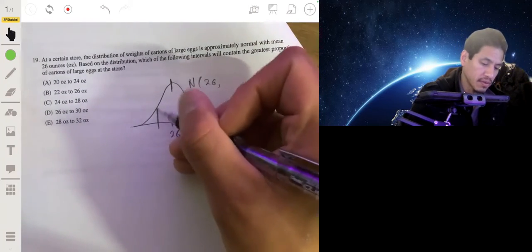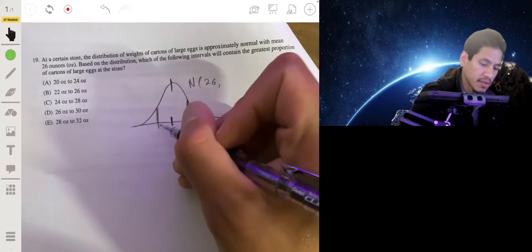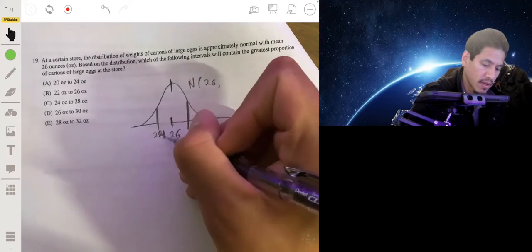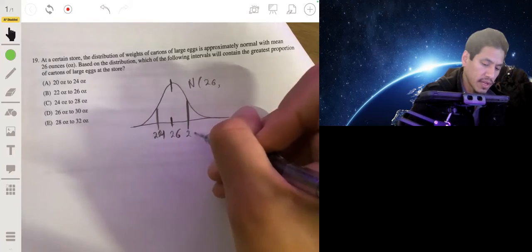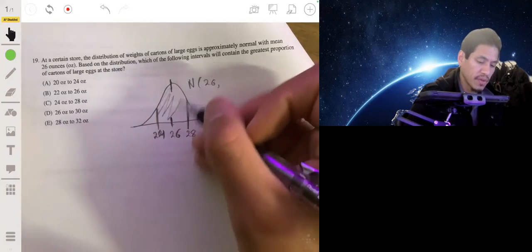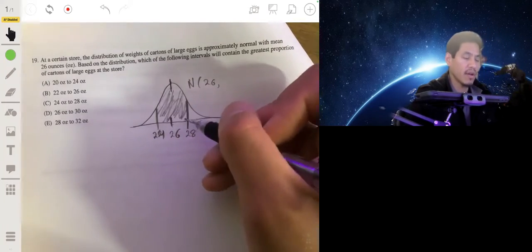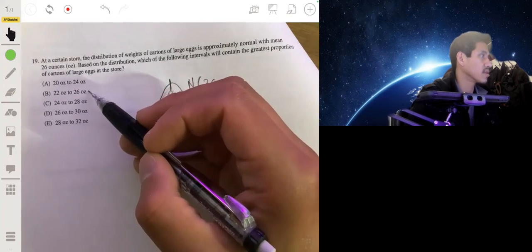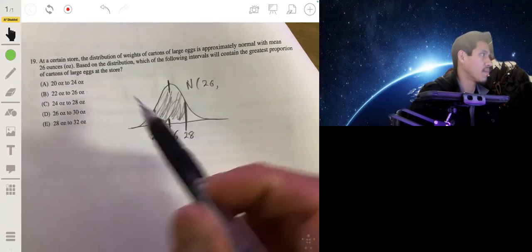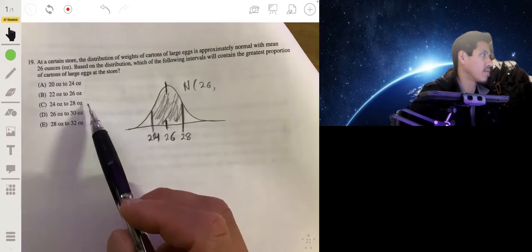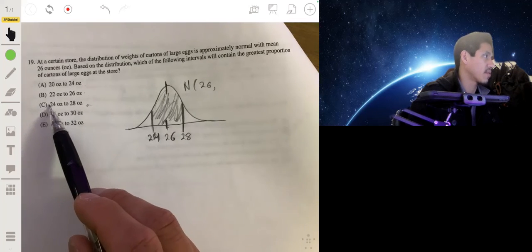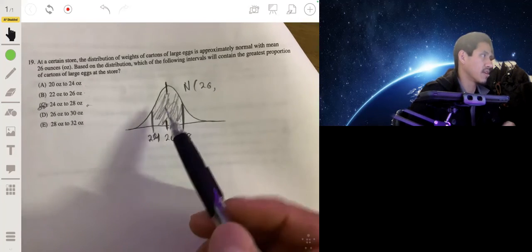So if we went to below 24 and to above 28, this would be the biggest area of four. So let's say we've got 22. Yeah, looks like it's going to be B. 24 to 28, because this is centered at 26. It has the greatest proportion. It has the greatest area under the curve.